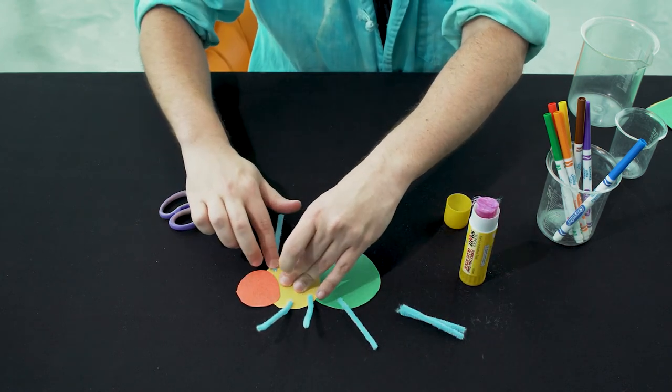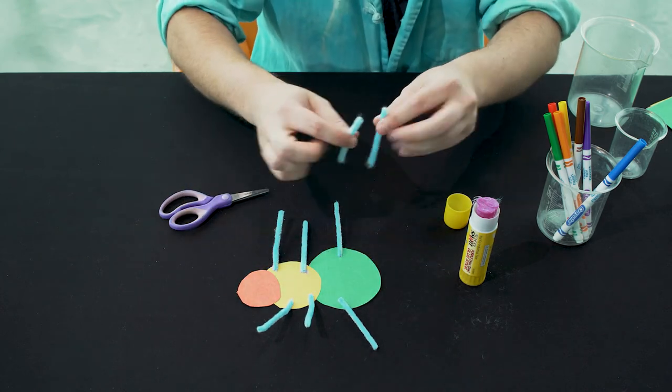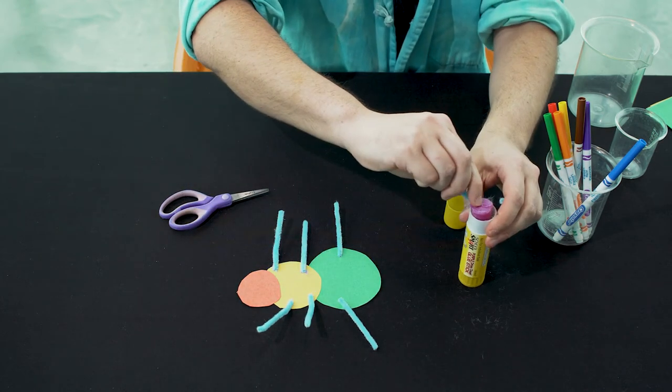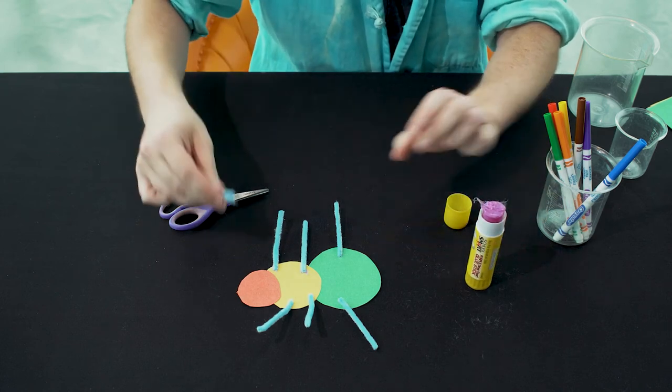Now, our insect needs some antennae so we're going to take our last two pipe cleaners and glue them to our insect's head.